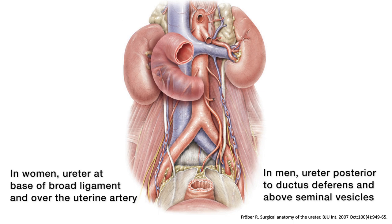During pelvic dissection, the ureter is vulnerable to injury during the peritoneal division and lateral mobilization of the mesorectum. This video will focus primarily on the abdominal ureter identification.